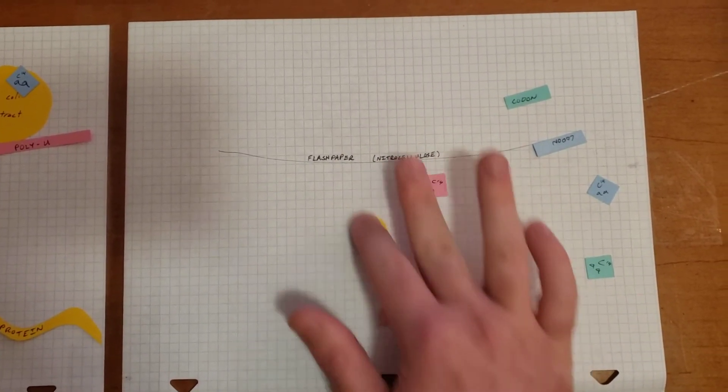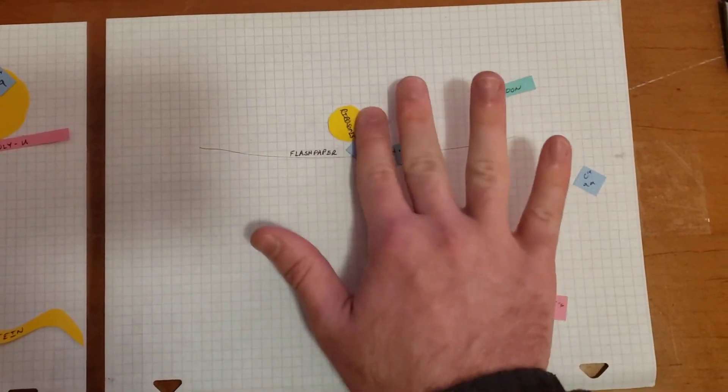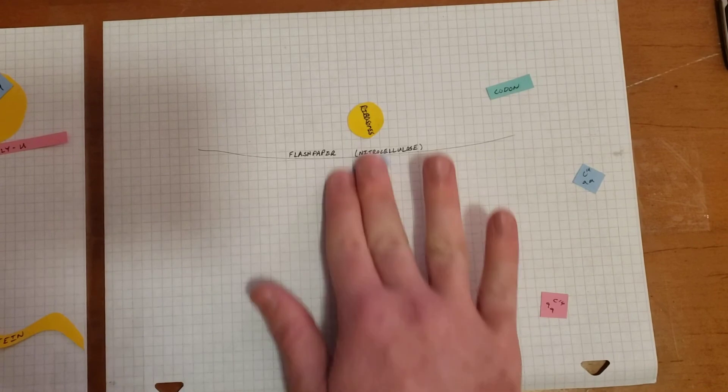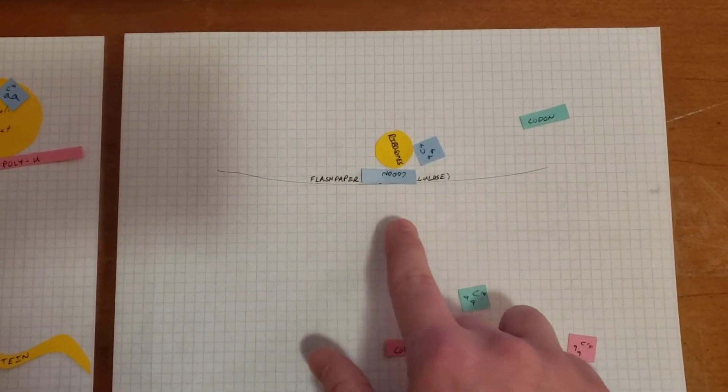And they tried it with a whole bunch of other ones. Let's try this codon. Does it work with this? No. It falls right through. Flash paper's cold. Does it work with this? Sure does. It stays on top. Flash paper's hot. This codes for this.